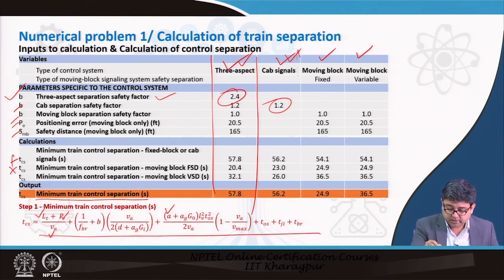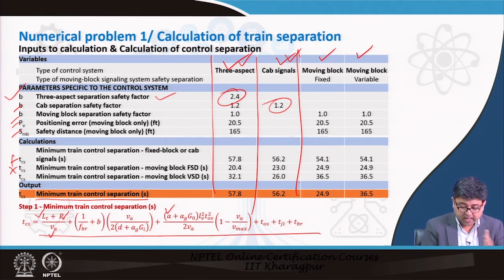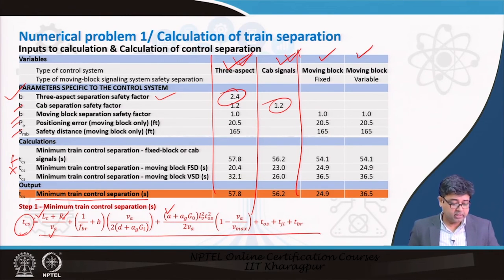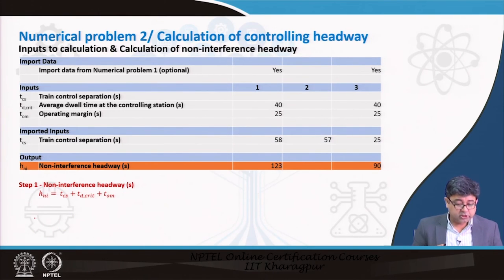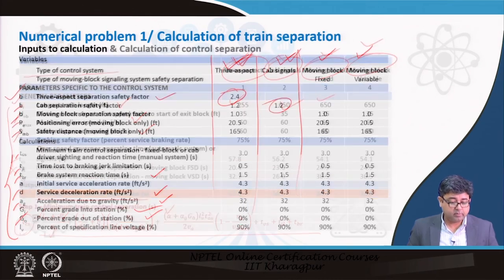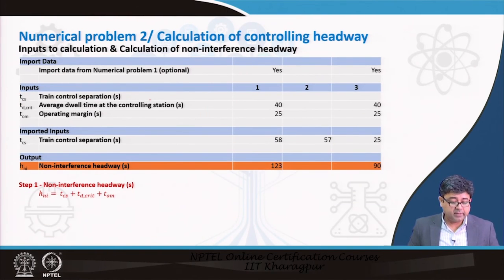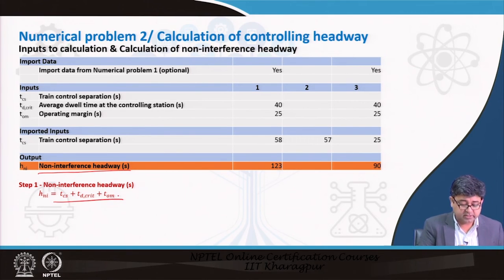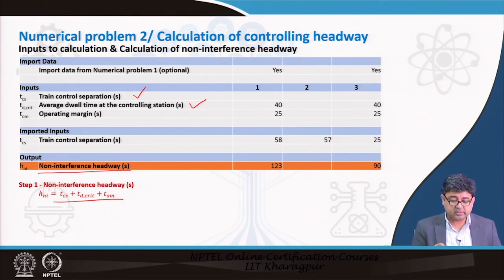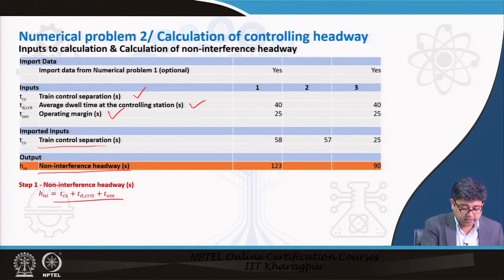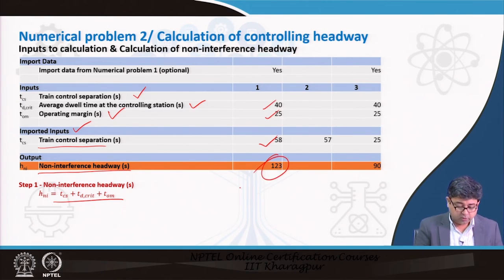The minimum train control separation formula can look complex but do not be intimidated — each value is already provided as an input parameter. You calculate certain intermediate parameters and then insert everything into the formula for each type of control system. This gives you the minimum train control separation, which is then imported as an input for the next calculation. The formulas are all empirical and the input parameters come from standard tables.